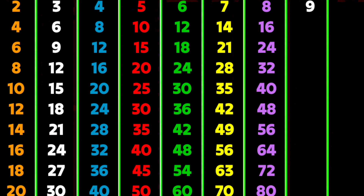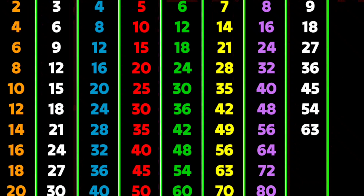9 1's are 9, 9 2's are 18, 9 3's are 27, 9 4's are 36, 9 5's are 45, 9 6's are 54, 9 7's are 63, 9 8's are 72, 9 9's are 81, 9 10's are 90. Table of 10.